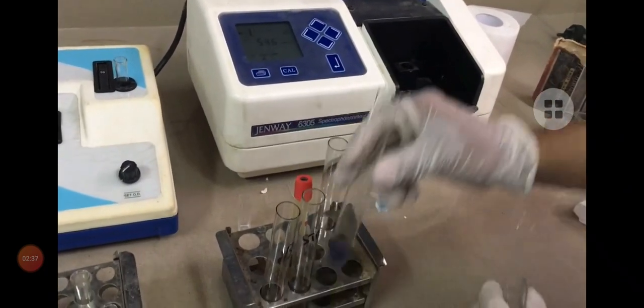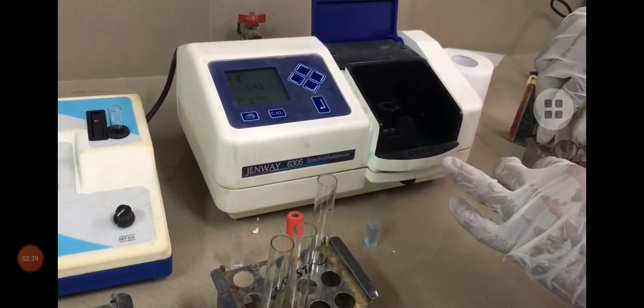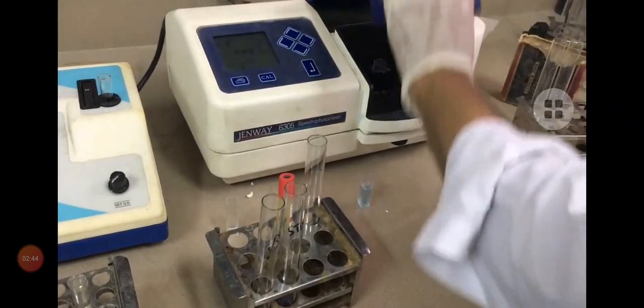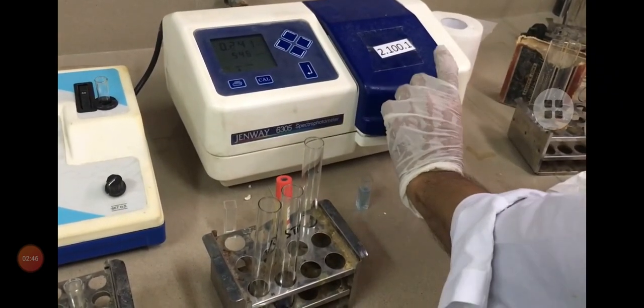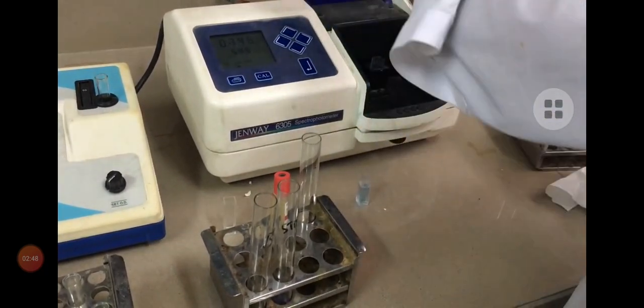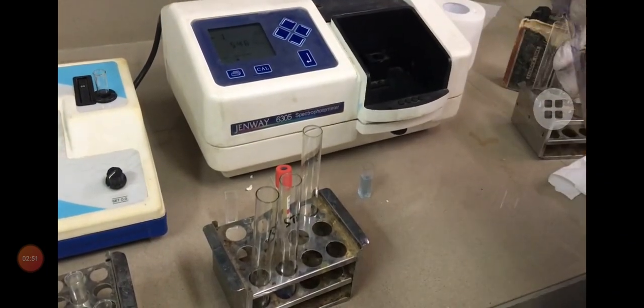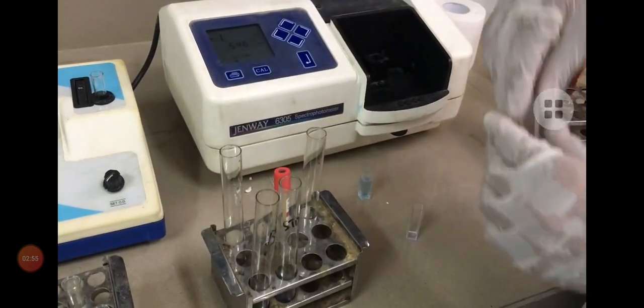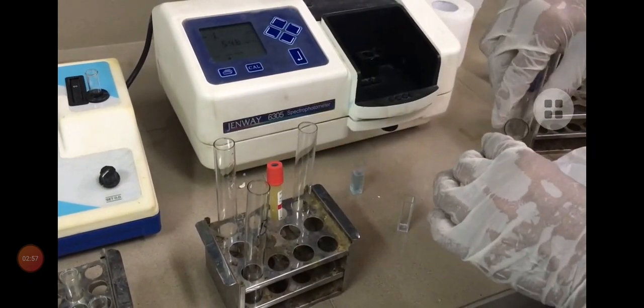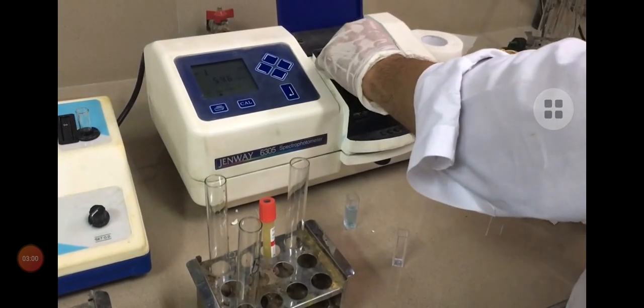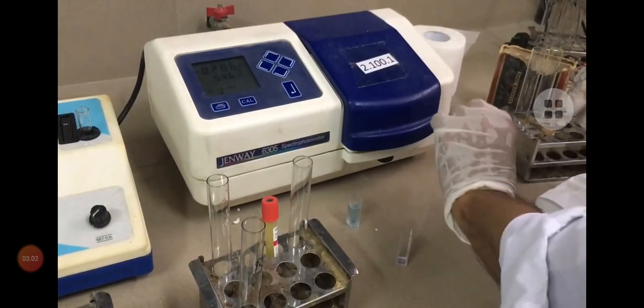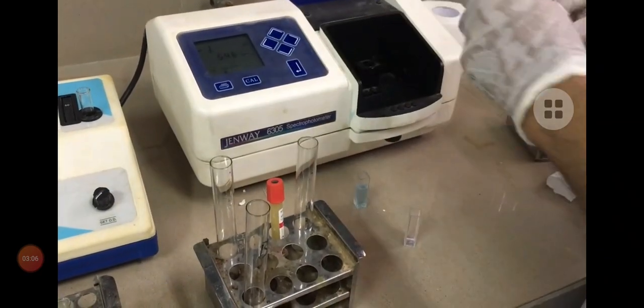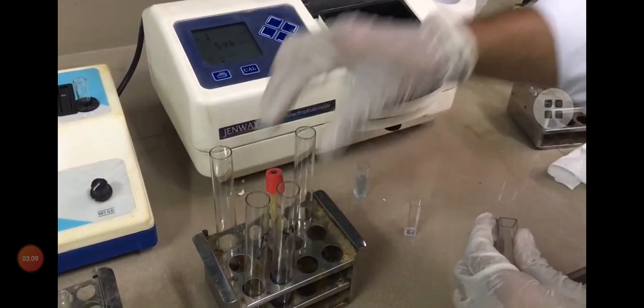We will measure its absorbance and take the reading. We have put the sample in the cuvette and now we have taken the reading. At the end we are going to add the standard in the cuvette and we will take the reading. We note down all the readings and put them in the formula.